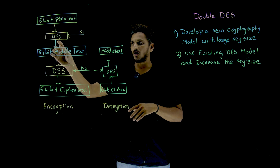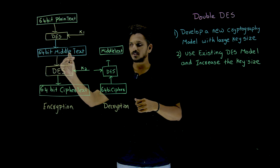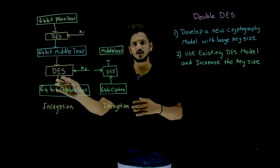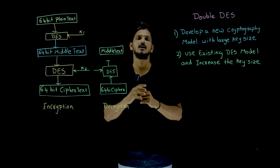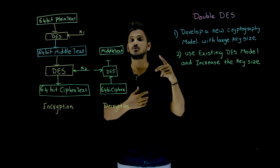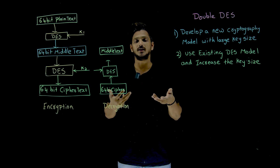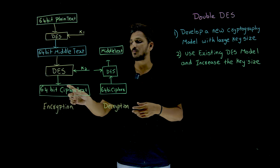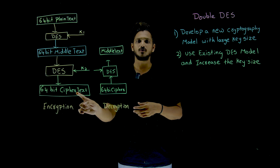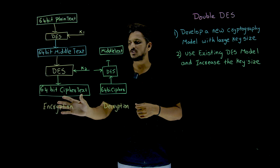The output from the first DES we call a 64-bit middle text. This middle text is given as input to the next DES. Again, the same DES 16 rounds are going on here, but this time it is going to use K2 as the key, where K2 is also 56-bit. They are going to use two keys with size 56 and 56, which increases the possibilities. The final output is a 64-bit ciphertext, which comes after two DES algorithms. This is what happens in encryption.